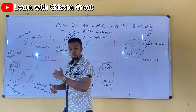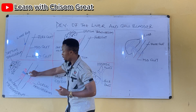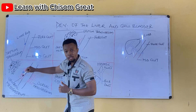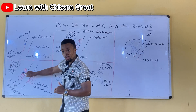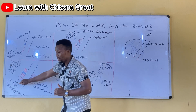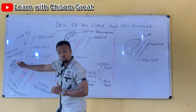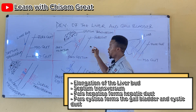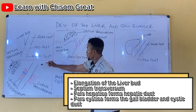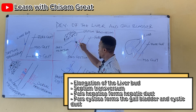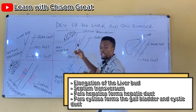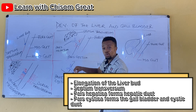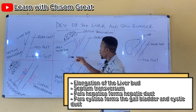This thickening begins to elongate. The hepatic bud or the liver bud begins to elongate. It grows crossing through the ventral mesogastrium, then it moves towards the septum transversum. As this liver bud elongates and grows towards the septum transversum, it begins to form branches.